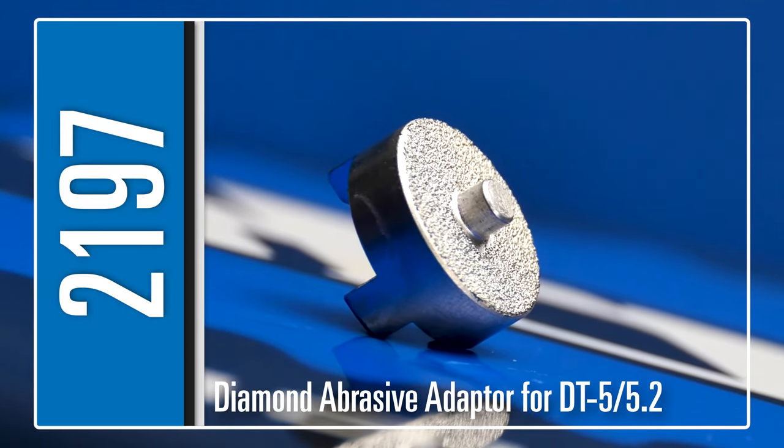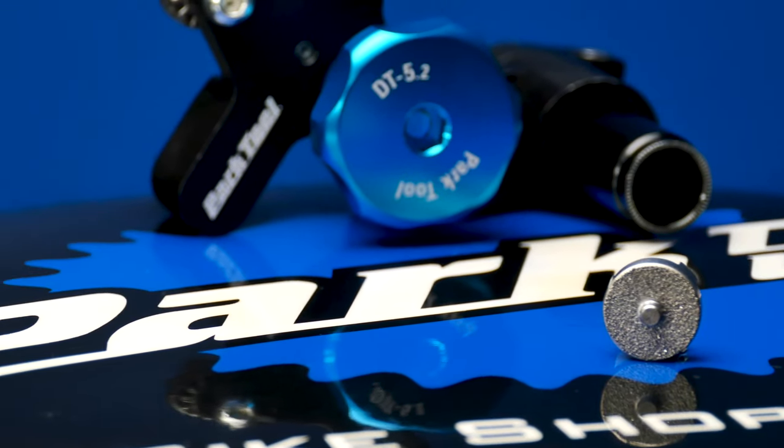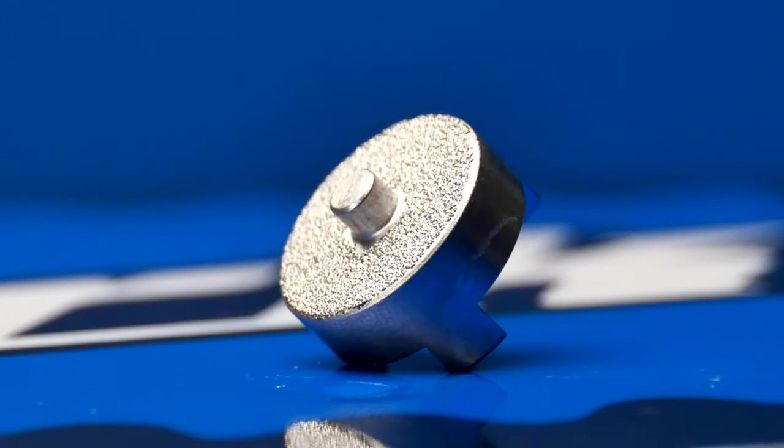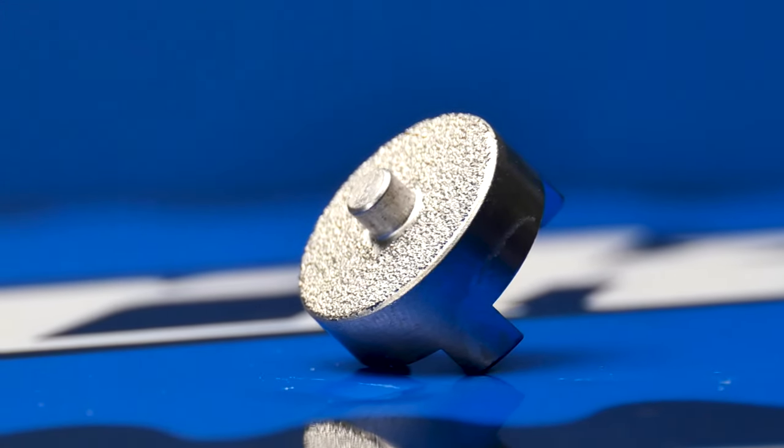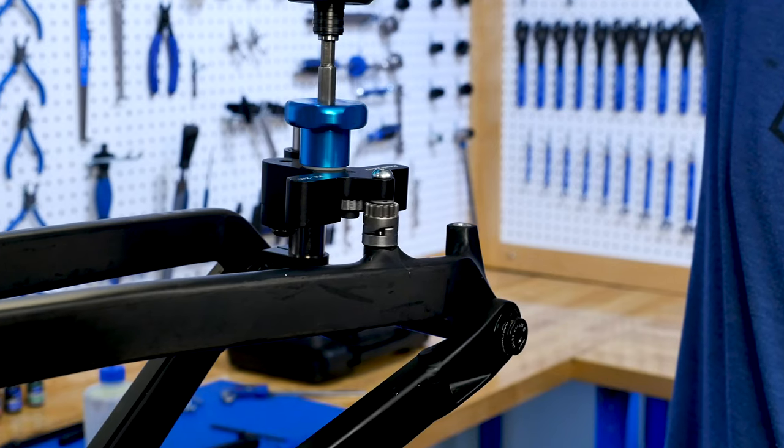The 2197 Diamond Abrasive Adapter is an add-on accessory for the DT5 and DT5.2 disc brake mount facing set. The brazed-on diamond grit surface of the 2197 was specifically designed to enable easier and more efficient facing of carbon fiber disc brake mounts.